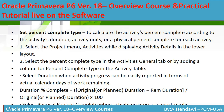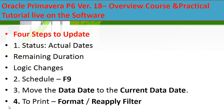You also have to agree on the percent complete types. In Primavera you have physical percent complete, where you measure the actual progress on site manually. You have units percent complete, which is tied to the resources. And you have duration percent complete, if you measure progress based on durations. I will show you that now in the live software.